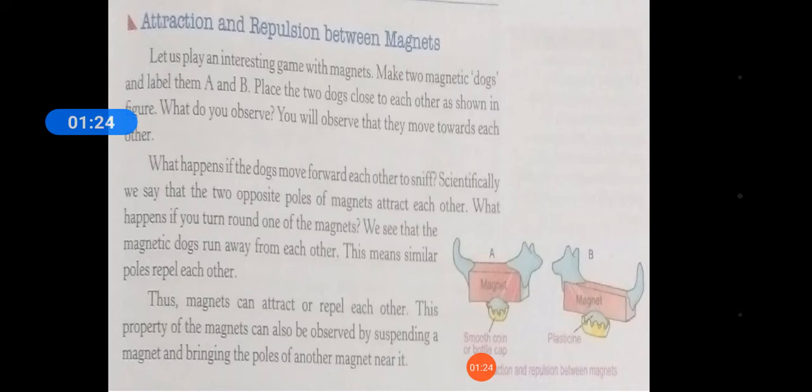What happens if the dogs move forward to each other to sniff? Scientifically we say that the two opposite poles of magnet attract each other. What happens if you turn down one of the magnets? We see that the magnetic dogs run away from each other. This means similar poles repel each other.